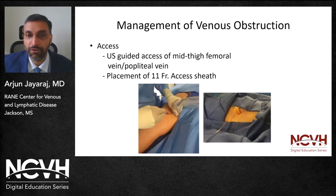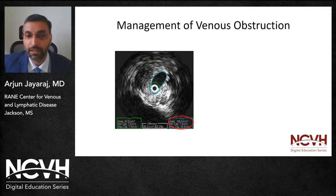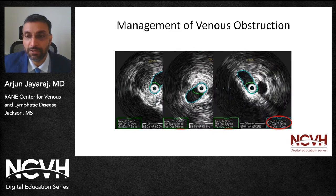Access is typically performed in the mid-thigh femoral vein or the popliteal vein depending on where there is adequate inflow, and the next step is to place an access sheath. We typically use an 11 French sheath for our procedures. An initial venogram is performed to obtain the flow dynamics and IVUS interrogation is performed both pre and post. In this particular patient, you will notice that the common femoral vein is around 109 millimeters squared luminal area, the external iliac is around 116, and the common iliac is around 170.